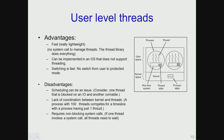Let us start with user threads. In a user thread, as shown here, we have the kernel space where the operating system or the kernel executes, and we have the user space which has different processes executing. Now each of these processes could have multiple threads running. In addition to this, we have a runtime system which manages the several threads in this particular process. Also what is required is a thread table which is stored as part of this runtime system.